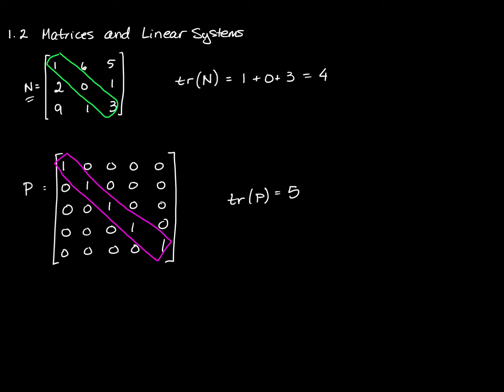So the trace of an identity matrix that's got N entries is going to be N, because there are N rows and N columns, but there's only a 1 in one position, and it happens to be on the diagonal. So if you add all those up, you're going to get whatever that number is, only for an identity matrix.